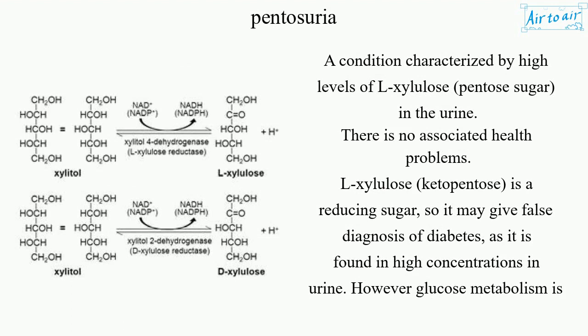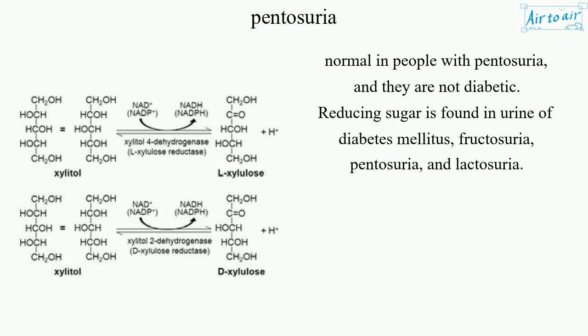Pentosuria is a condition characterized by high levels of L-Xylulose, a pentose sugar, in the urine. There are no associated health problems. L-Xylulose, a ketopentose, is a reducing sugar, so it may give a false diagnosis of diabetes as it is found in high concentrations in urine. However, glucose metabolism is normal in people with pentosuria and they are not diabetic.